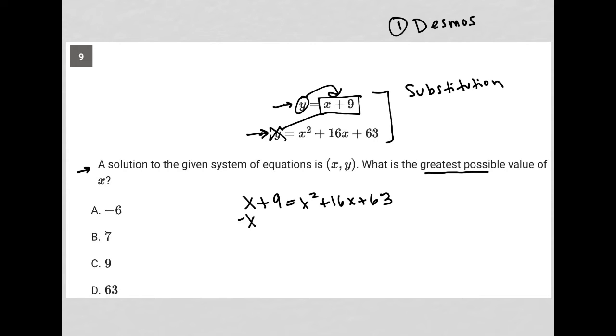I can then simplify this by subtracting x and subtracting 9 from both sides, so basically combining like terms. This is all gone from the left, leaving me with just 0. And on the right hand side, I have x squared plus 15x plus 54.